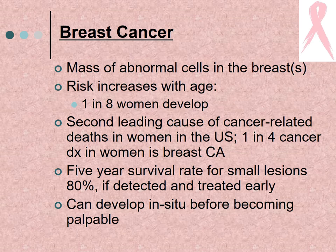Breast cancer is a mass of abnormal cells in the breast. Risk increases with age — one in eight women will develop breast cancer. It is the second leading cause of cancer-related deaths in women in the United States, accounting for one in four cancer diagnoses in women. The five-year survival rate for small lesions is 80% if detected and treated early. It can develop in situ before becoming palpable.